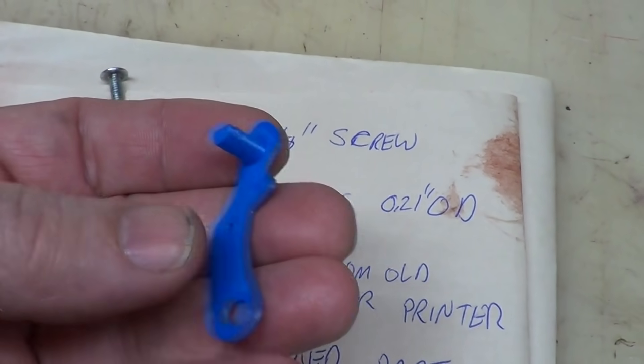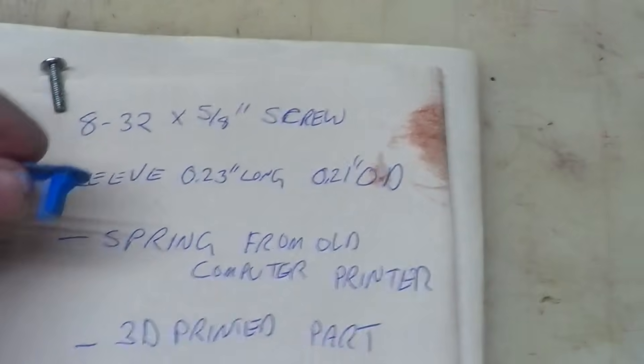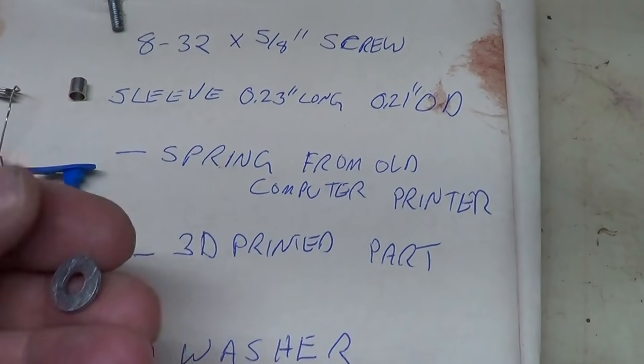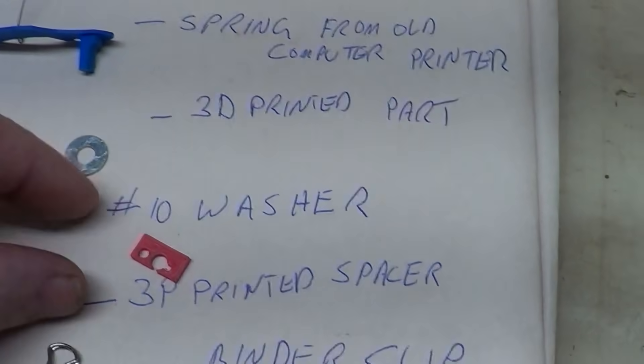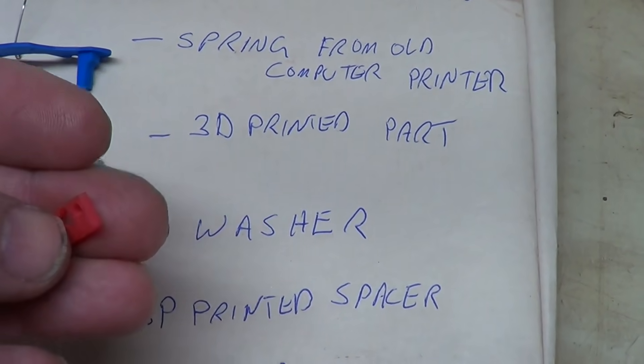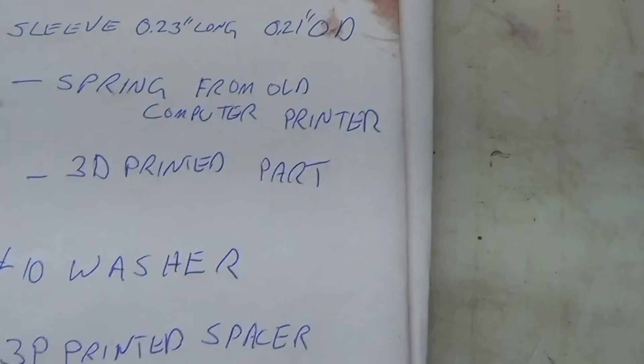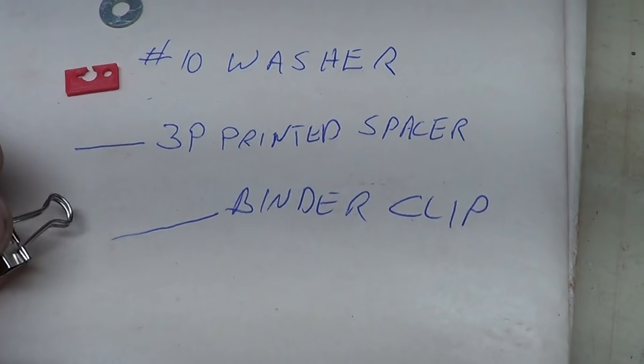Here is the 3D part that you print out. And again, I'll put this on Thingiverse. Number 10 washer. And this is a 3D printed spacer. Again, this will be on Thingiverse. And I'll put a reference to that down below. And a binder clip. Next, I'll show you how all these go together.